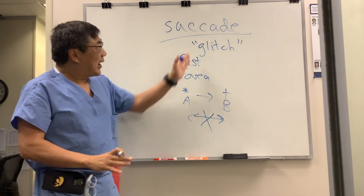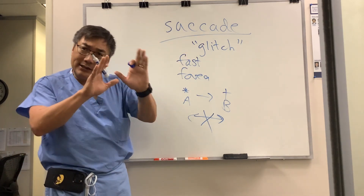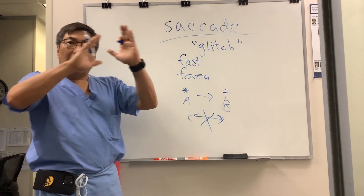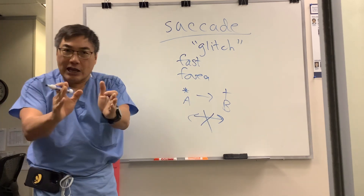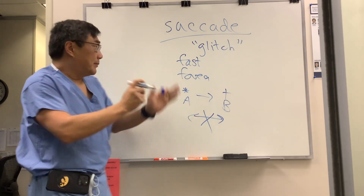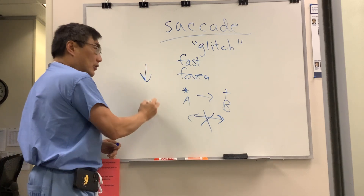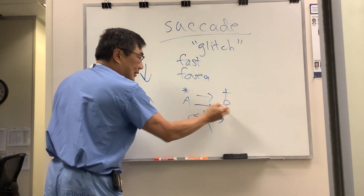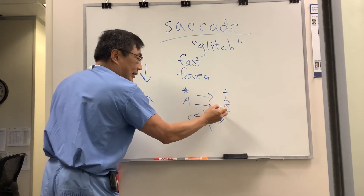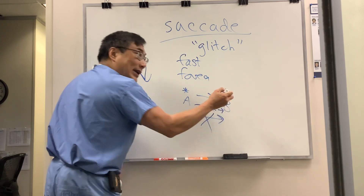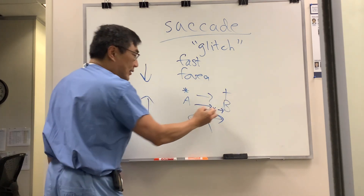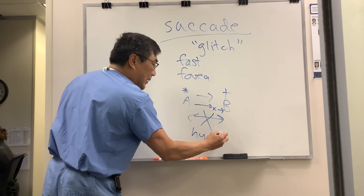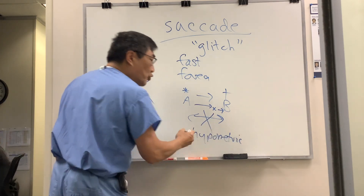If you have an abnormality with the saccade, it will be a fast movement foveation problem, and it can be either too little or too much. If it's too little, it doesn't get to target B — it only gets partway — and then you have to make a catch-up saccade to reach the target. That is a hypometric saccade: it was too little.